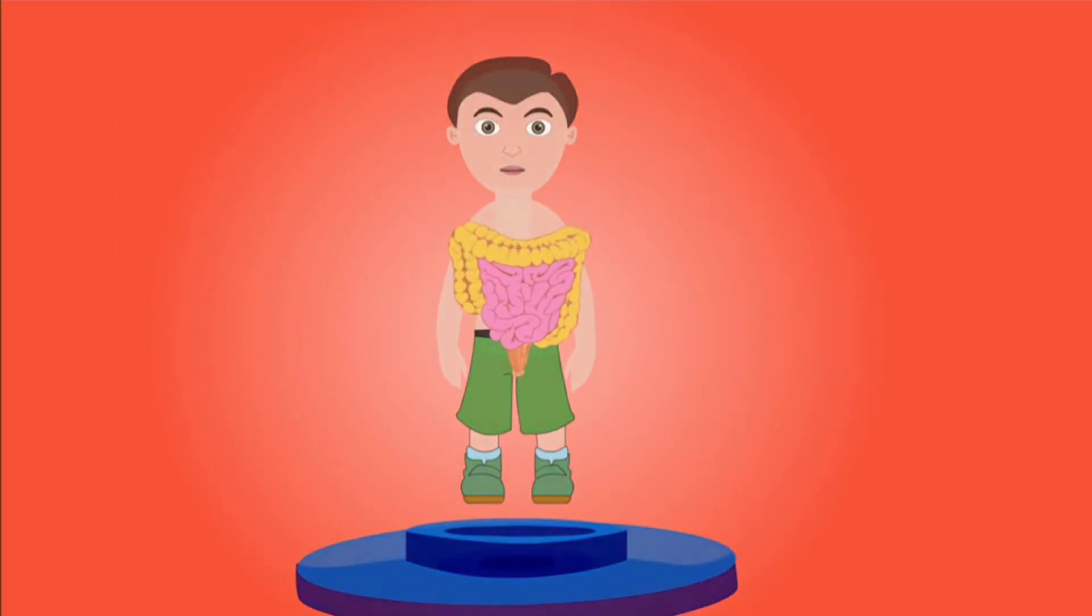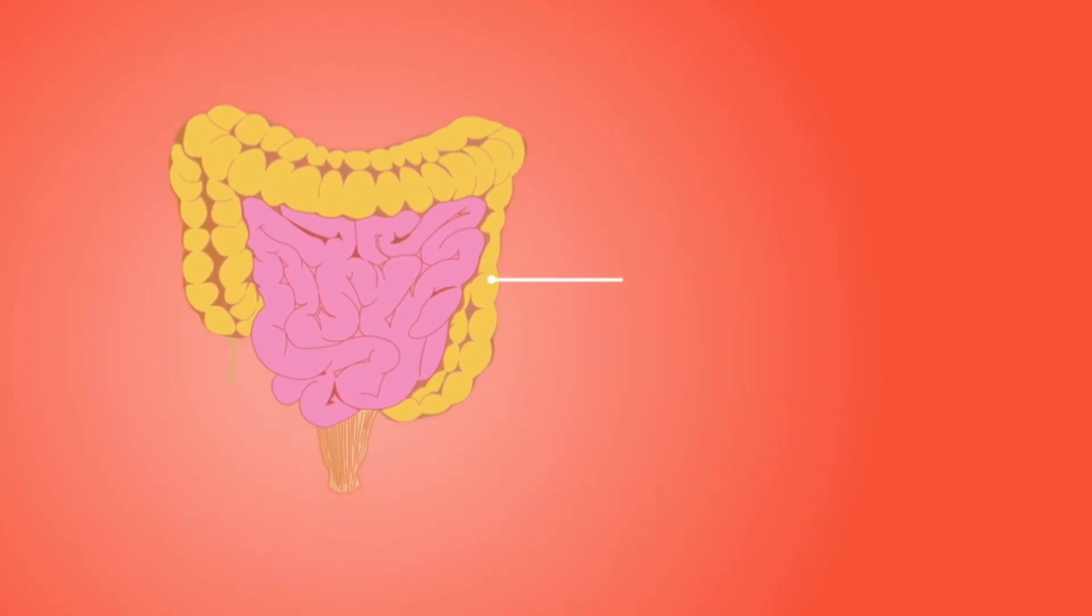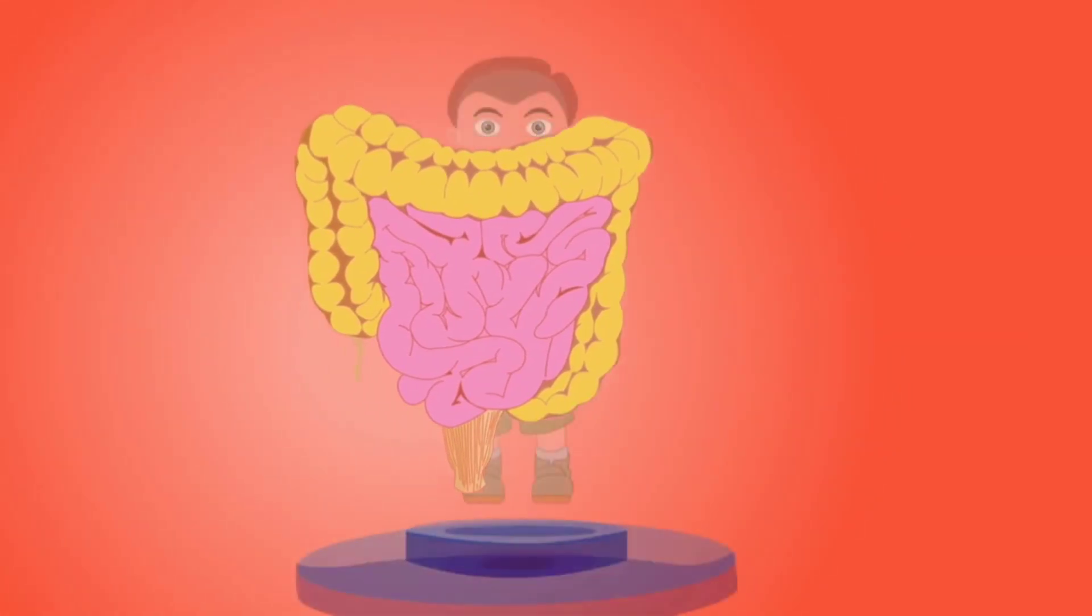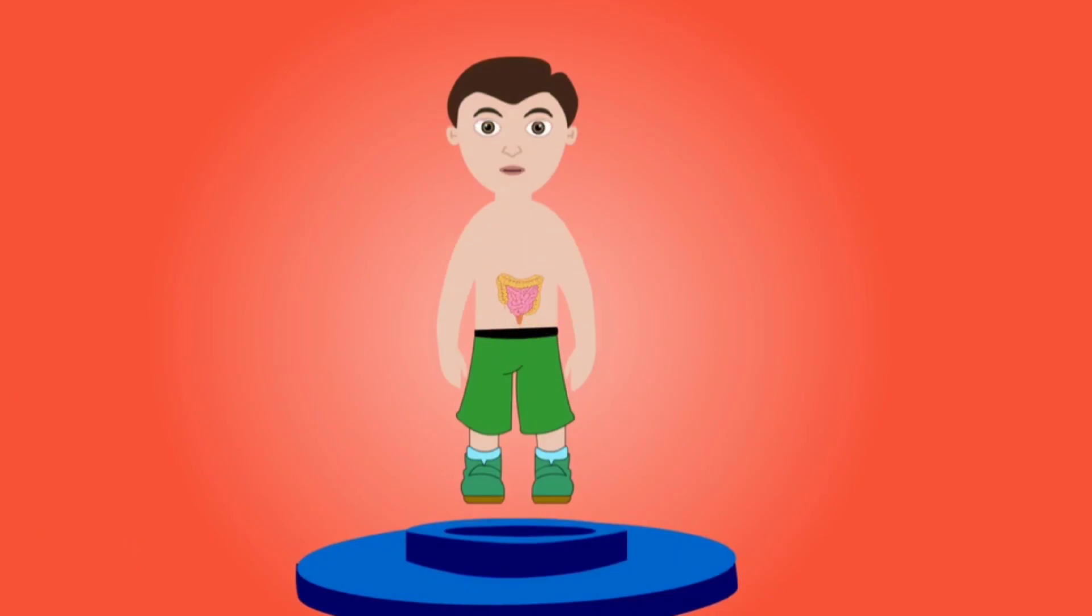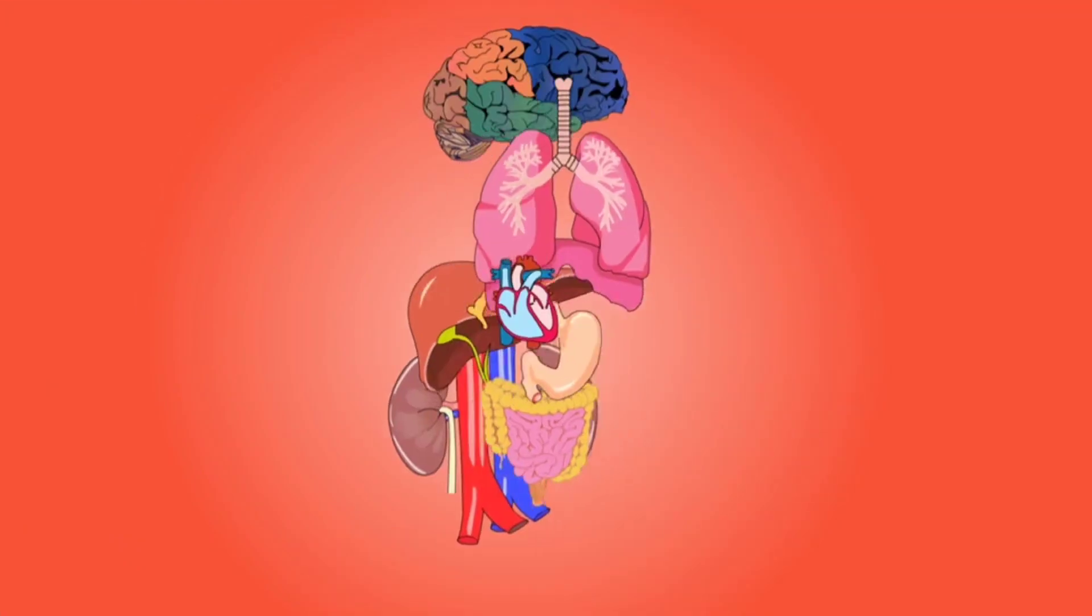The small intestine is 22 to 25 feet long and coils like a maze. The large intestine is five to six feet long.